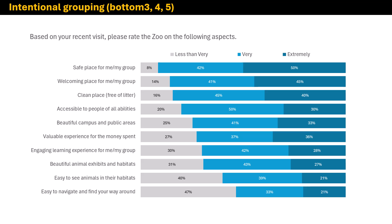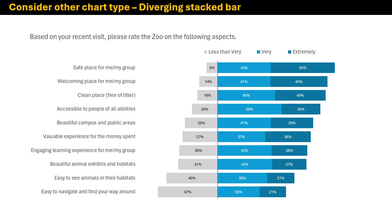The other thing we might want to do is think about the chart type. This is just a standard stacked bar chart, but what if we used a diverging stacked bar chart with a floating effect — a cut point in the middle at less-than-very, so that everything negative is on the left and everything positive is on the right? This looks really nice because you can very clearly see that the very and extremely bars start on the same common baseline, making it easy to compare the top-rated experiences like safe, welcoming, and clean.